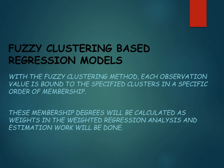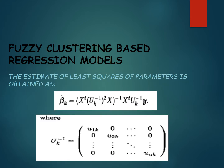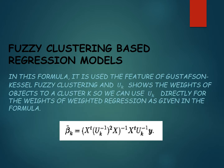With the fuzzy clustering method, each observation value is bound to specific clusters with specific membership degrees. These membership degrees are used to calculate weights in the weighted regression analysis, and the estimation is performed accordingly. In this formula, the Gustafson-Kessel fuzzy clustering feature is used, and the U-matrix shows the weights of each object to cluster k, so we can use the U-matrix directly as weights in the weighted regression.